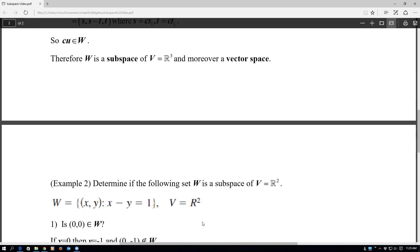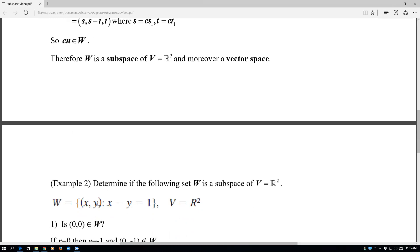So the first thing to look at is the zero vector. Well, if I want to get (0, 0) in there, X and Y both have to be zero. So let's just let X be zero. If X is zero, then by using this equation here, Y has to be equal to a negative 1. And (0, -1) is not in W, so that doesn't work.